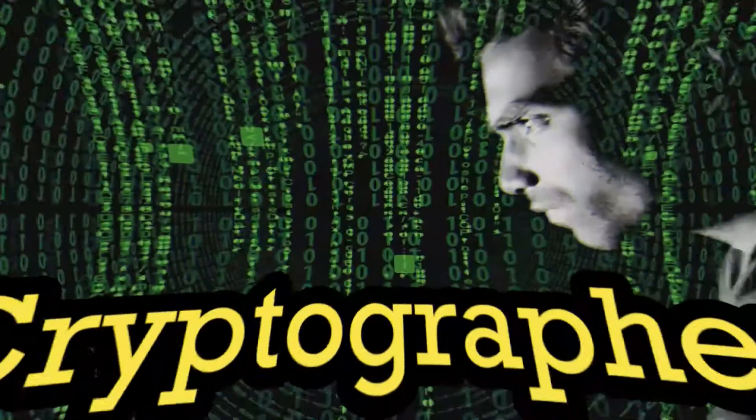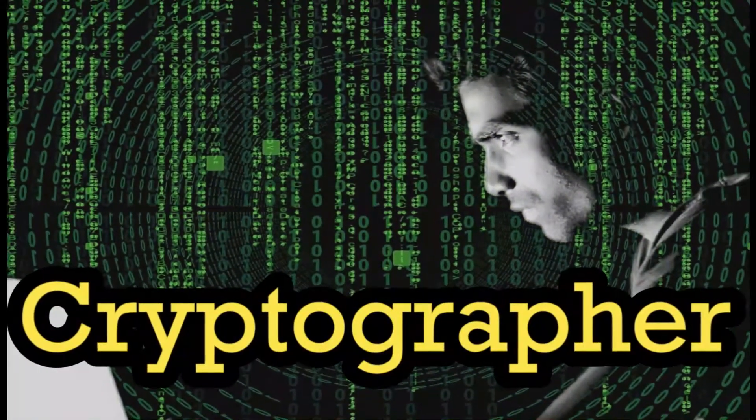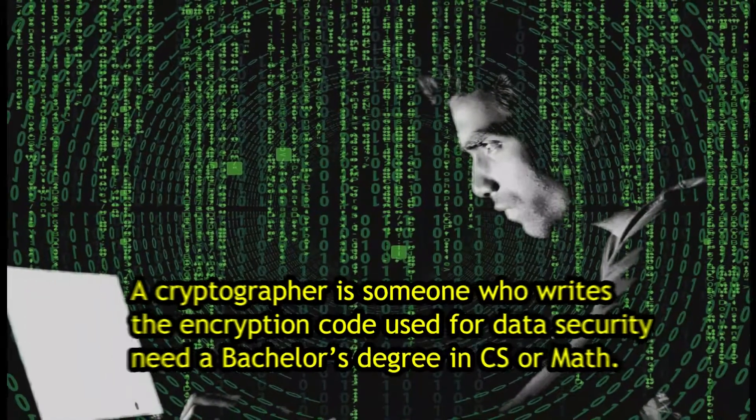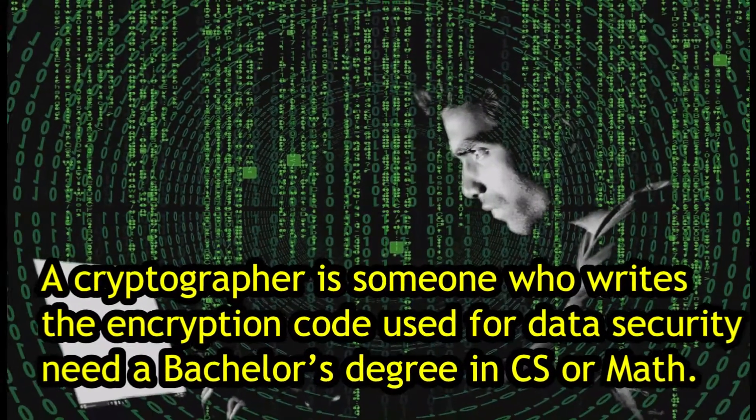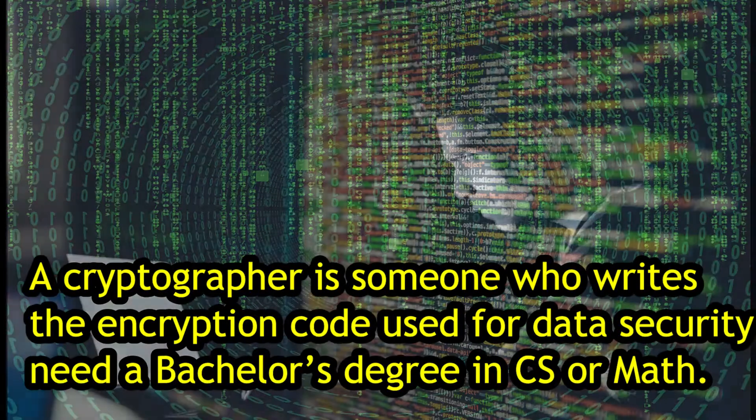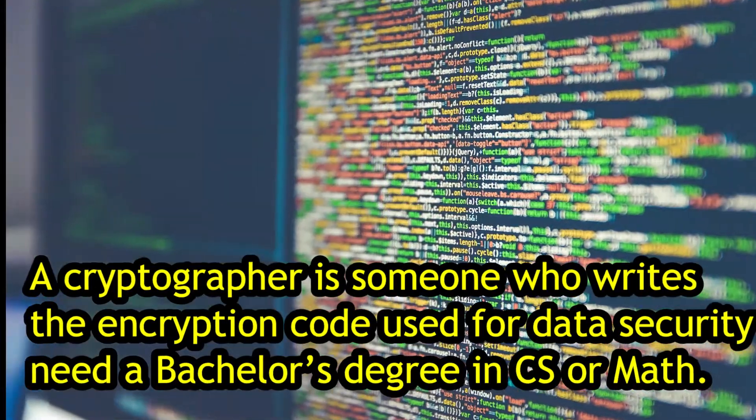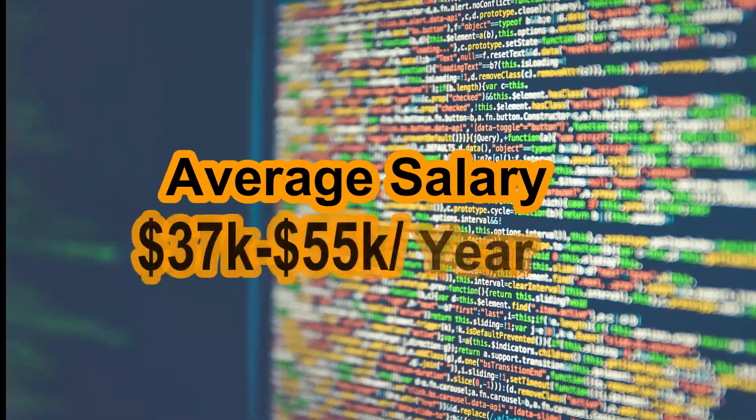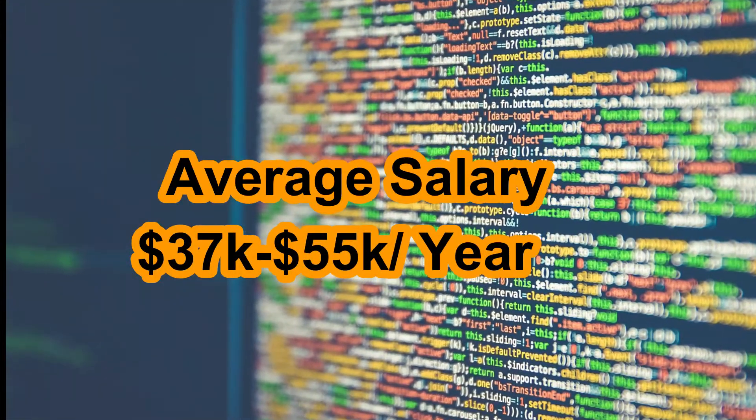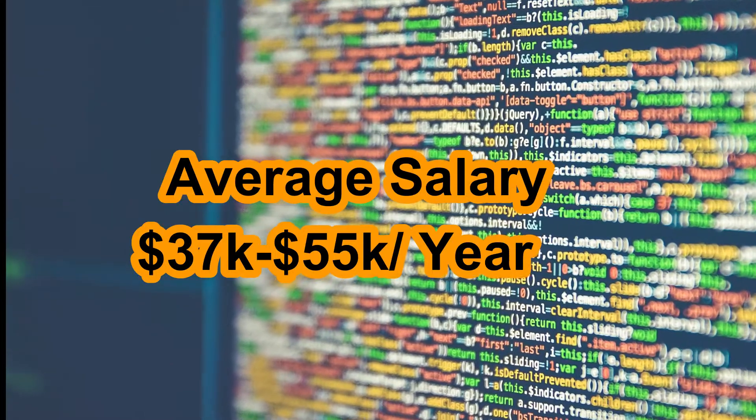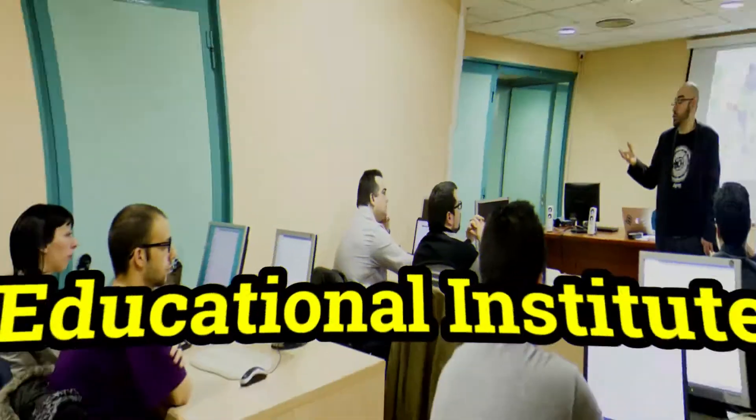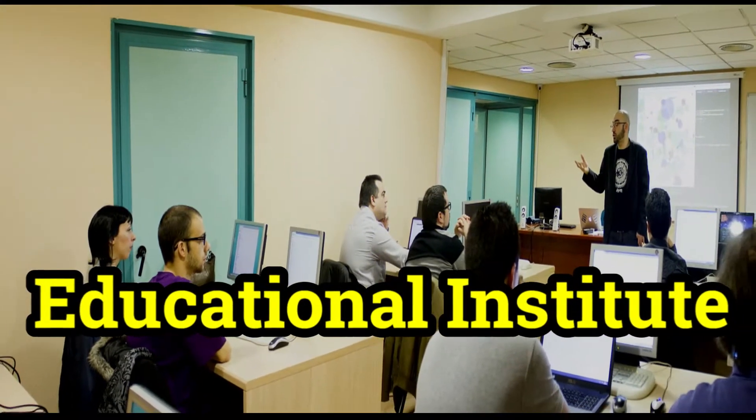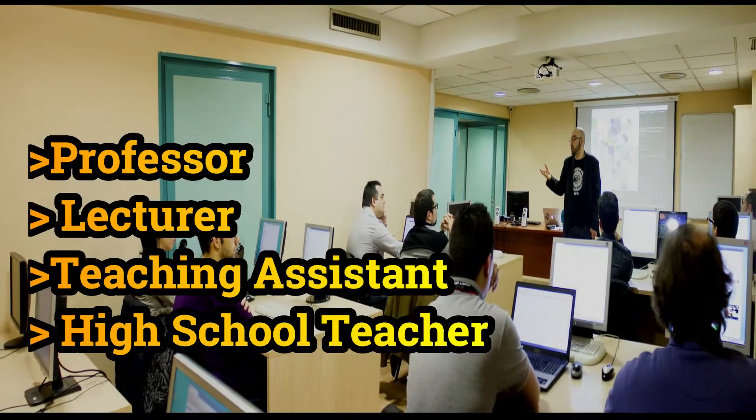Number four, you can work as a cryptographer. A cryptographer is someone who writes the encryption code used for data security. Minimum need a bachelor's degree in computer science or mathematics to start a cryptographic career. Average salary is $37,000 to $55,000 per year.